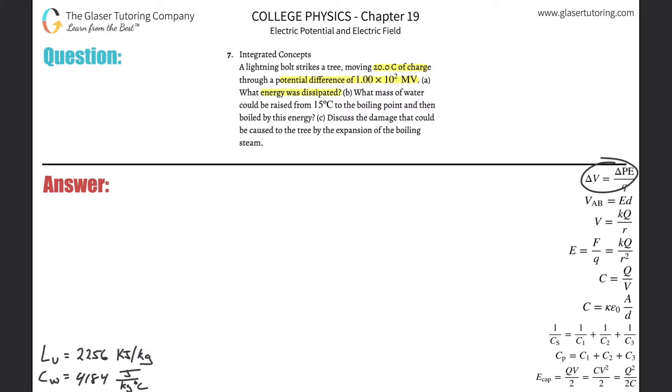use the formula over here. The change in voltage is going to be equal to the change in potential energy, or the energy that was dissipated, divided by the charge. So it says the potential difference in the problem was 1 times 10 to the 2 megavolts, but the problem is we got to convert megavolts